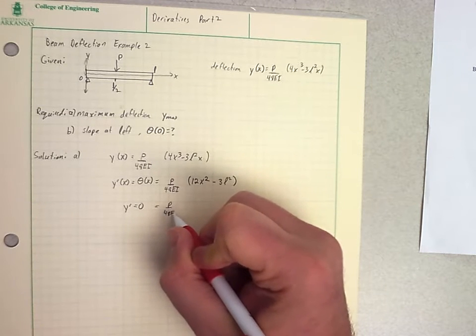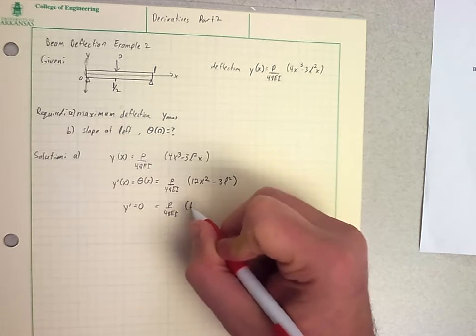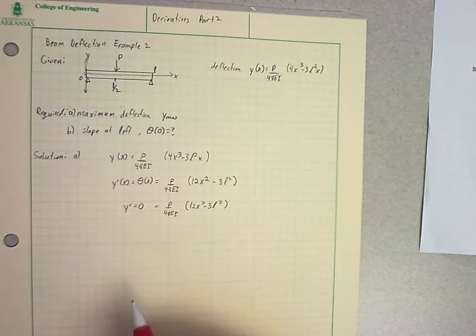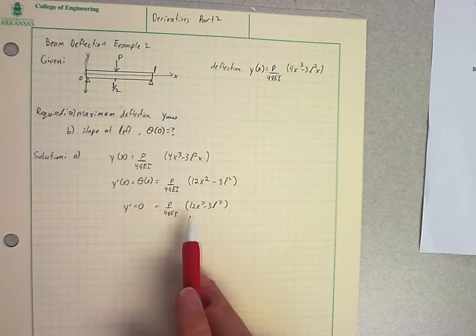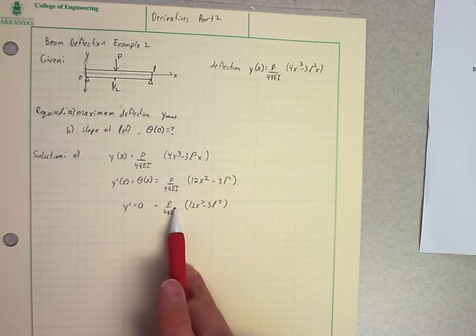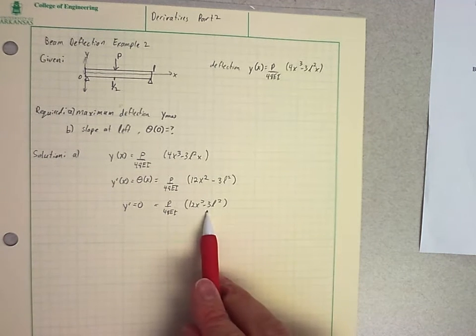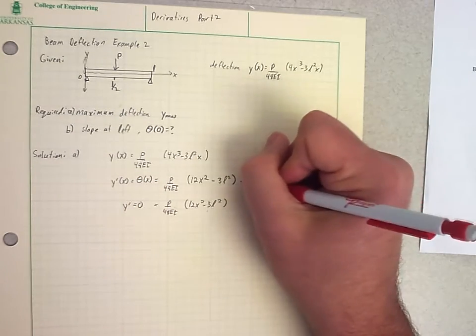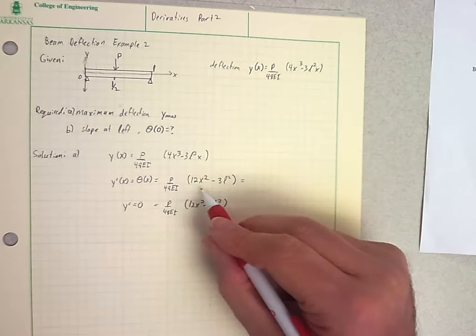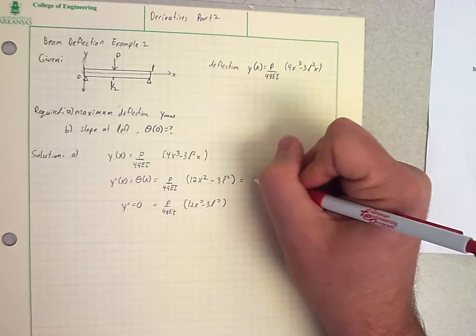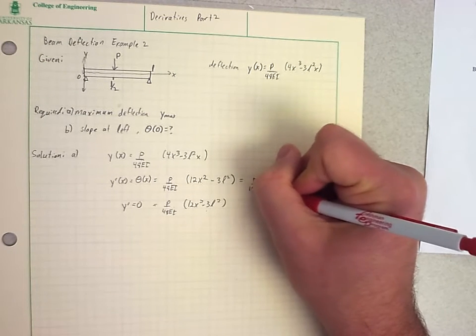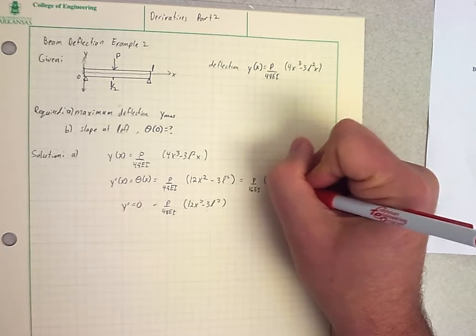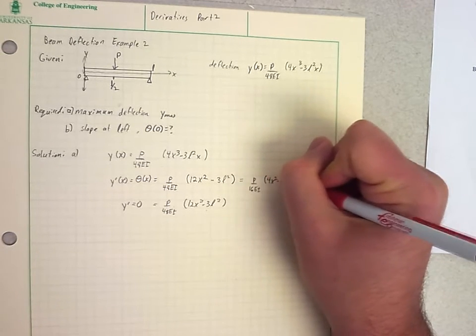So I have this expression. That's just a constant. So really, I can just set this part in parentheses equal to 0. The other thing I could have done was simplified this one more step. You had a factor of 3 I could have taken out of here. So I could have made this P over 16 times EI times 4X squared minus L squared.